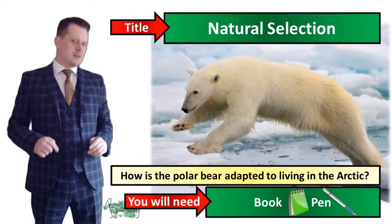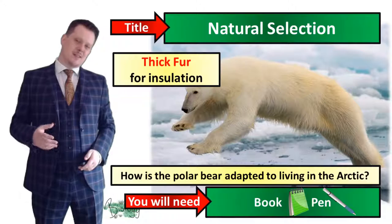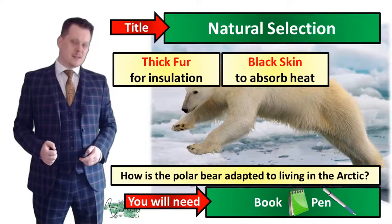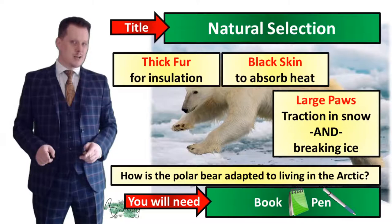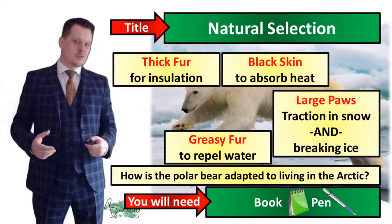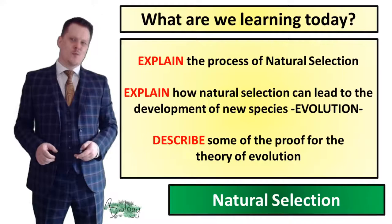So let's have a look at how this polar bear is adapted to life in the Arctic. It has thick fur for insulation, which allows the polar bear to keep warm. It also has black skin to absorb the heat, and large paws so it can get more traction in the snow and break the ice to get food underneath. It also has greasy fur which helps it repel water when it has to swim.